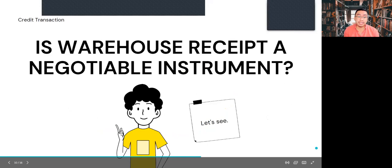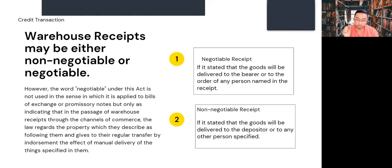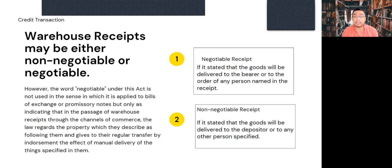Is a warehouse receipt a negotiable instrument? A warehouse receipt is in no sense a negotiable instrument because it does not comply with Section 1, Paragraph B of Act No. 2031 or the Negotiable Instruments Law, which requires an unconditional promise or order to pay a sum certain in money. However, a warehouse receipt could be either non-negotiable or negotiable. The word 'negotiable' under this Act is not used in the same sense as applied to bills of exchange or promissory notes, but only to indicate that in the passage of warehouse receipts through the channels of commerce, the law regards the property which they describe as following them, giving to their regular transfer by endorsement the effect of manual delivery of the things specified therein.